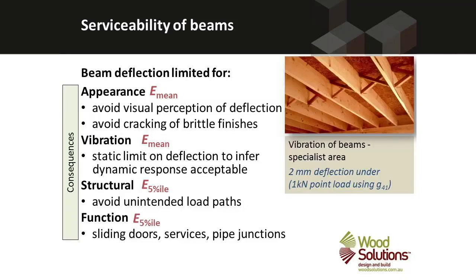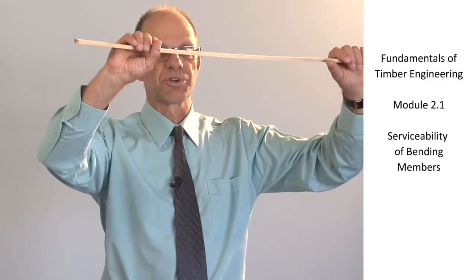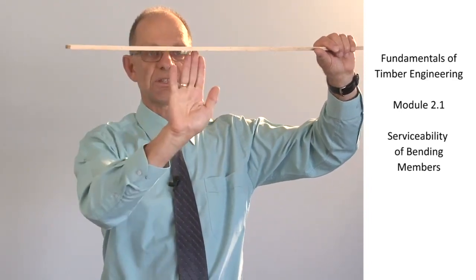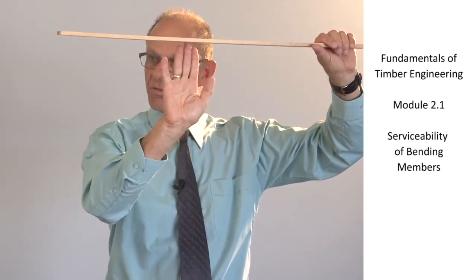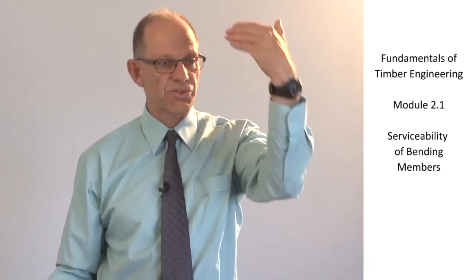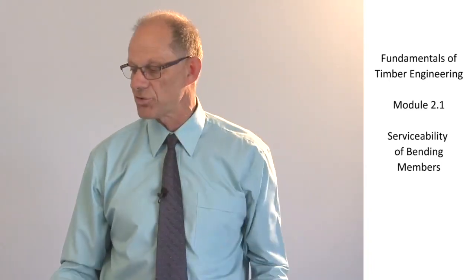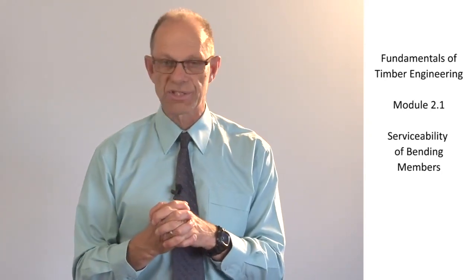Finally, function can be affected by deflection. If a beam over the top of a door deflects too much it can hit the top of the door and prevent the door from opening. That is a serviceability failure — these are the things we're trying to avoid in checking the serviceability of members.